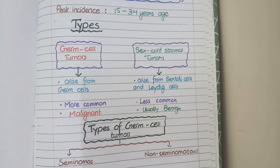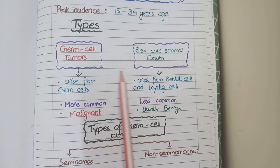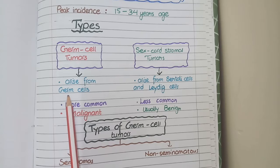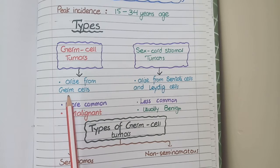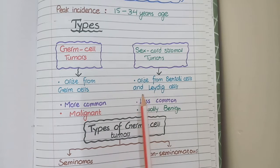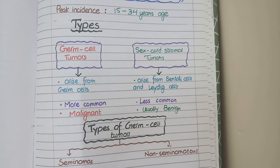Testicular tumors are broadly classified into two types: germ cell tumors and sex cord stromal tumors. Germ cell tumors originate from the series of cells that are eventually transformed into sperms — such cells are called germ cells. Sex cord stromal tumors arise from Sertoli cells and Leydig cells, whose function is to provide support to the germ cells or to secrete the male androgenic hormone testosterone.